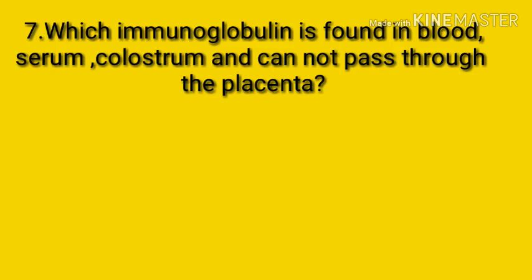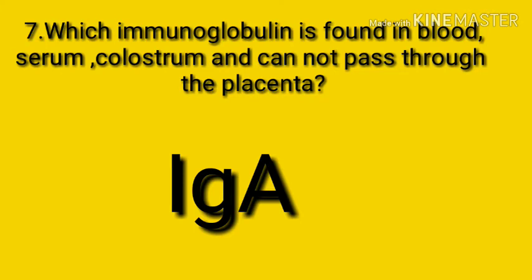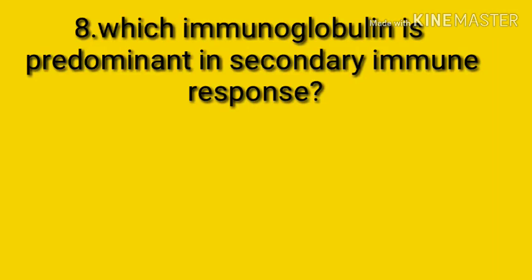Question number seven: which immunoglobulin is found in blood serum, body fluids like saliva, mucus, bile, tears, colostrum, and cannot pass through the placenta? The answer is immunoglobulin A. Immunoglobulin A is present in blood serum and various body fluids, and it cannot pass through the placenta.